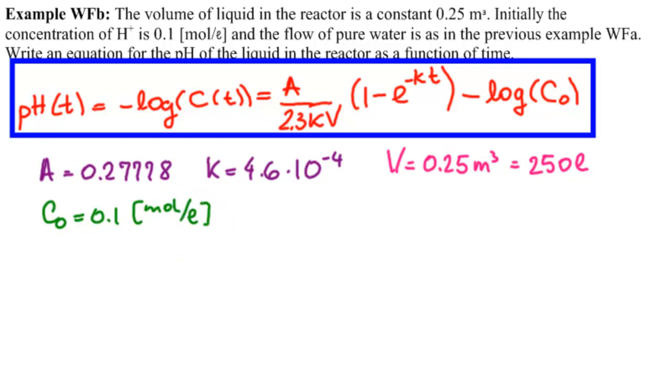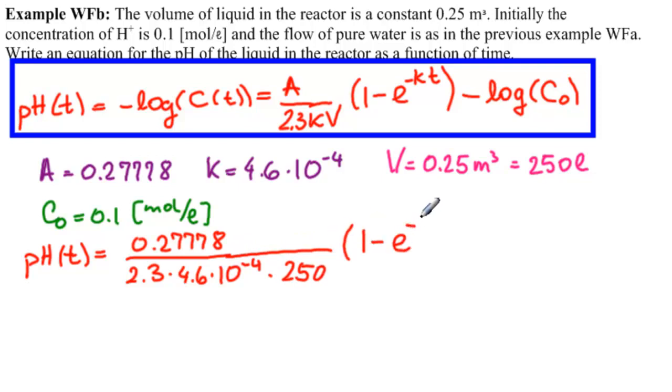So substituting all of these things in here, we have pH of T equals 0.27778 over 2.3 times 4.6 times 10 to the minus 4th, times 250, times 1 minus E to the minus 4.6 times 10 to the minus 4th T, minus log of 0.1. So get our calculator up and find these values.